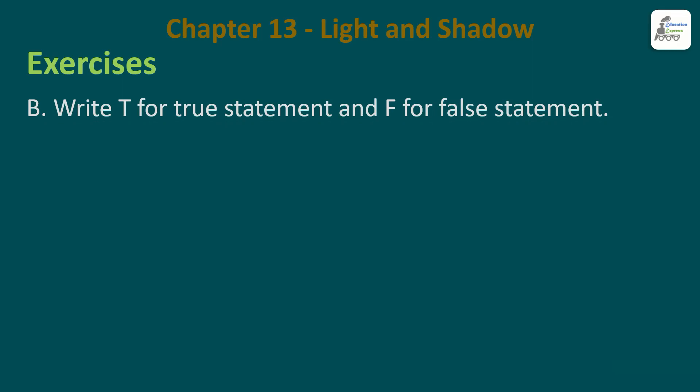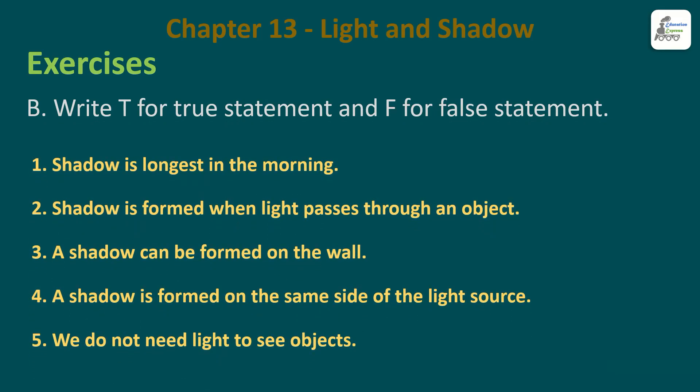Second exercise: Write T for true statement and F for false statement. First one - shadow is the longest in the morning. Is it longest in the morning? Yes, longest - so this is TRUE. Then - shadow is formed when light passes through an object. When light passes through an object there is no shadow, shadow forms when light does NOT pass through - so this is FALSE. A shadow can be formed on the wall - can shadow go to the wall? Yes, TRUE. A shadow is formed on the same side of the light source - no, it is on the opposite side - FALSE. We do not need light to see objects - we do need light to see objects - so this is FALSE.